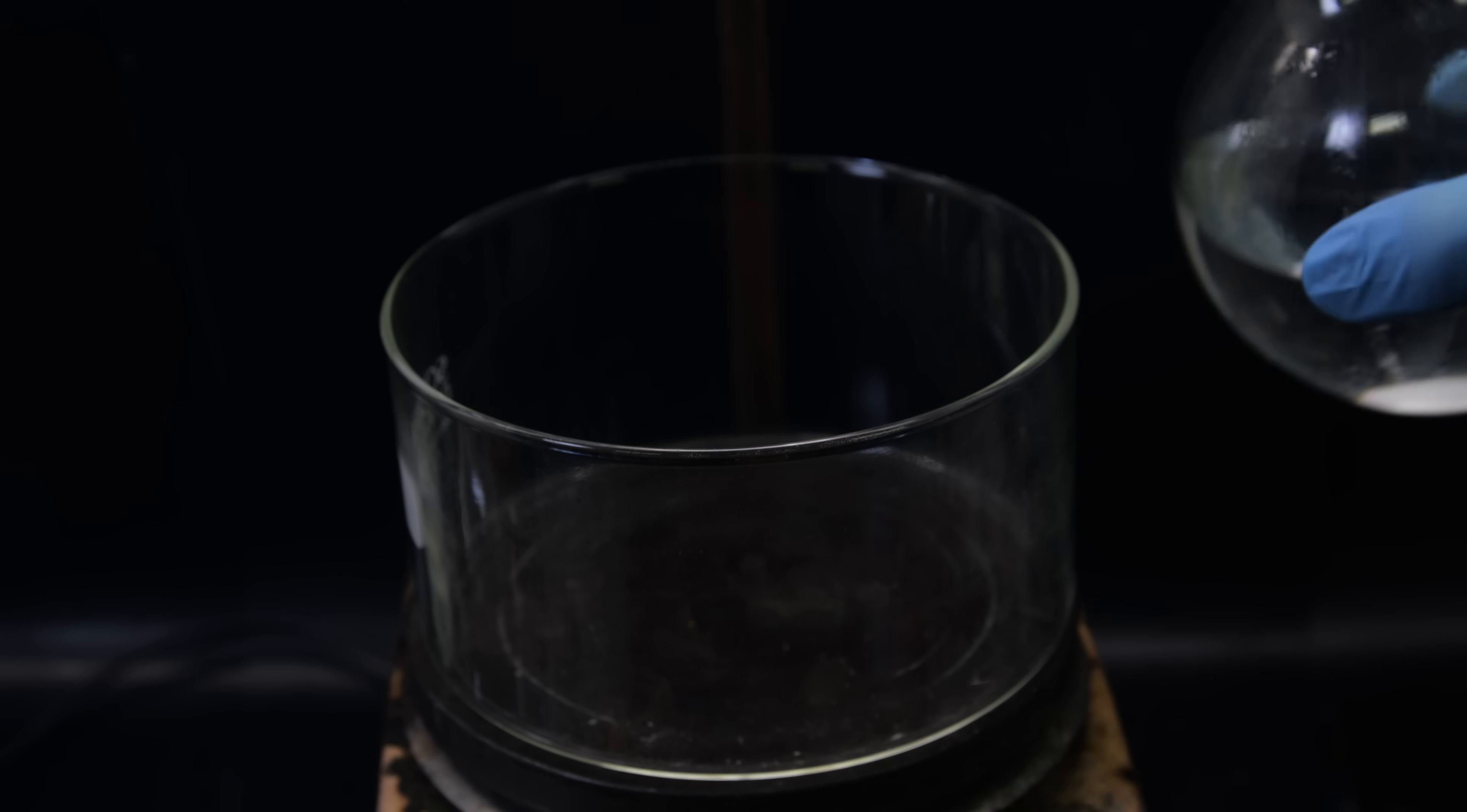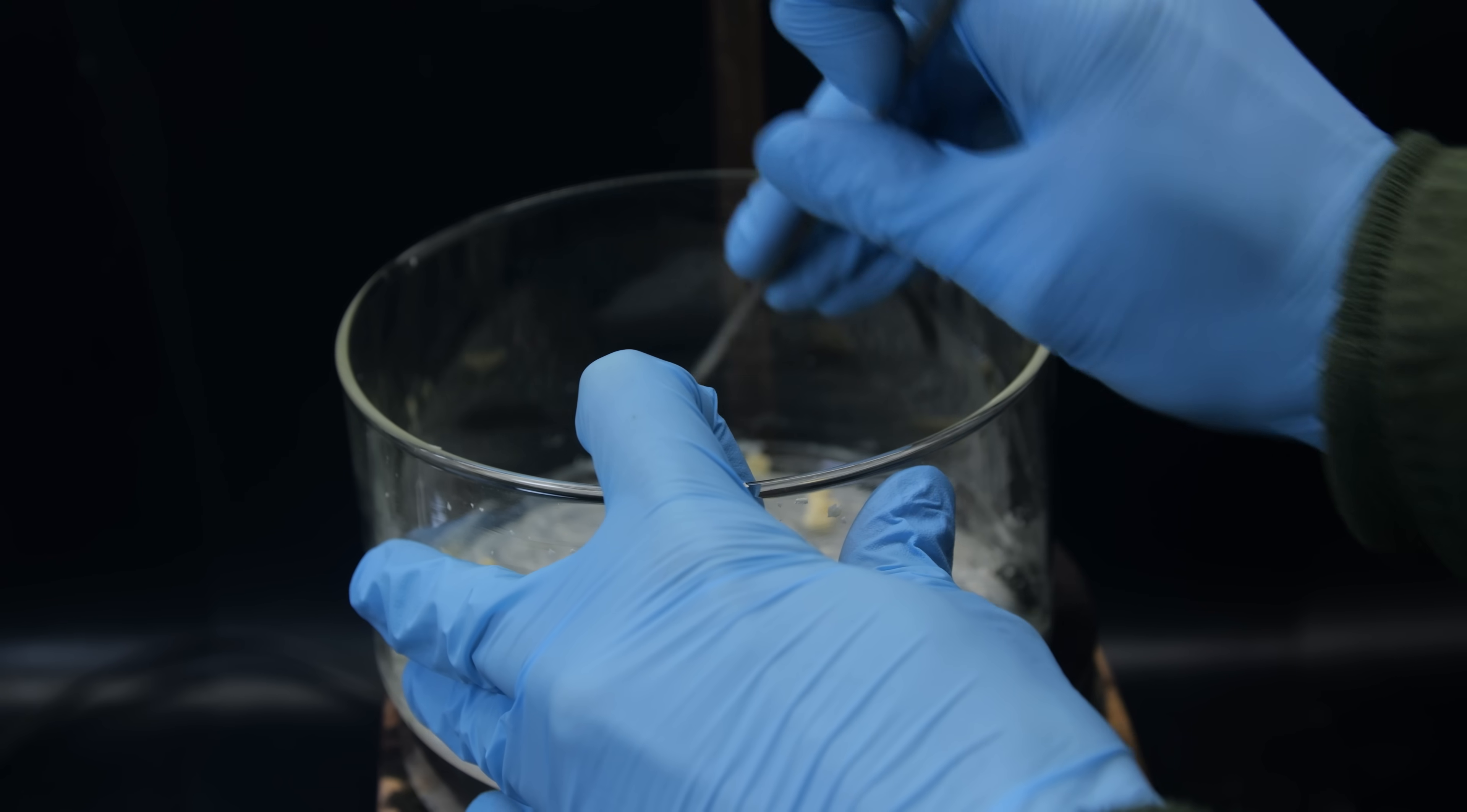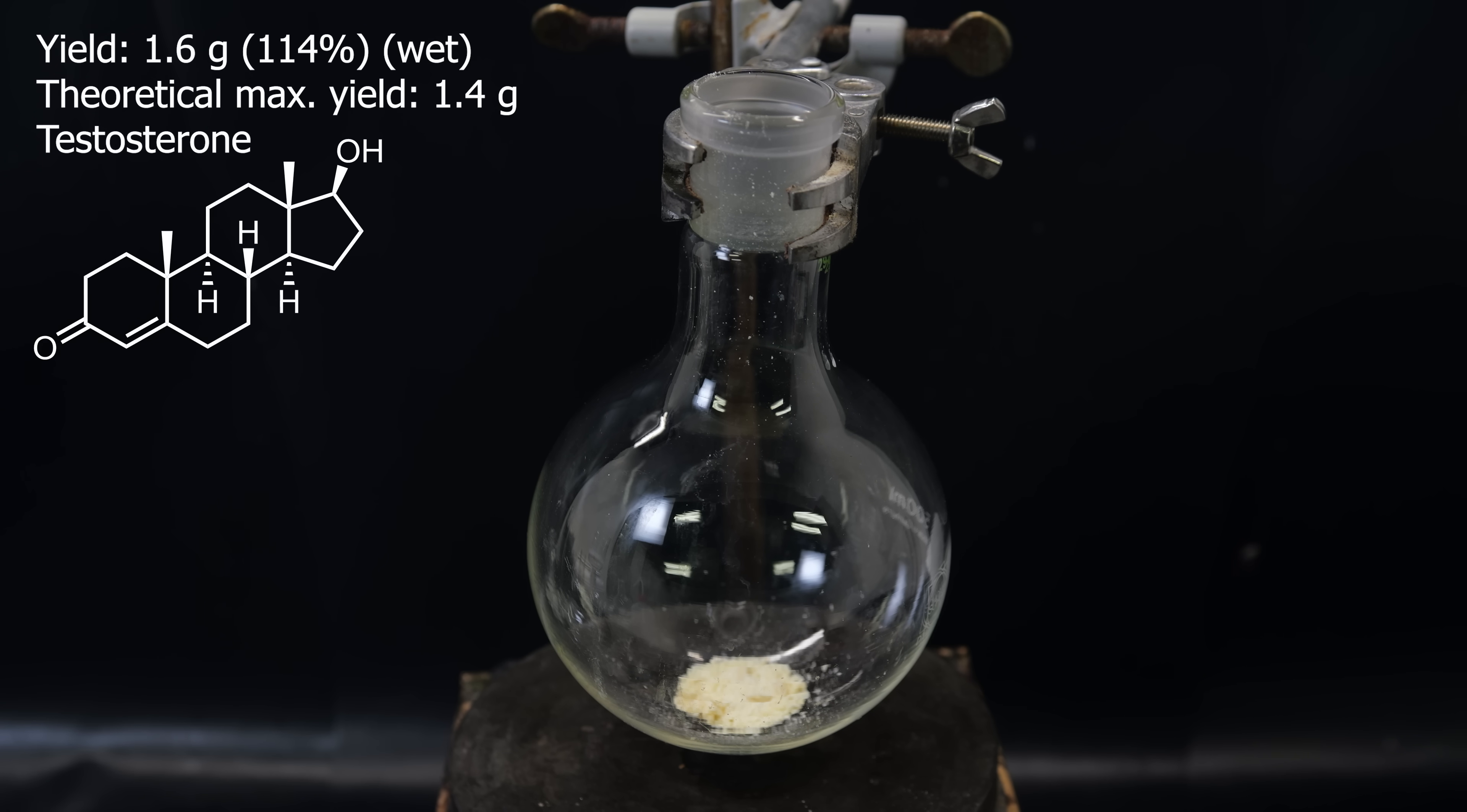And I then moved it all to this dish. I start heating it and stirring it, to simply boil off all of the solvent. Afterward, a yellowish solid is left behind, that I scrape off. It's not uncommon for testosterone to be slightly yellow. Even pharmaceutical testosterone esters are often slightly yellow.